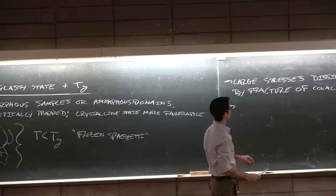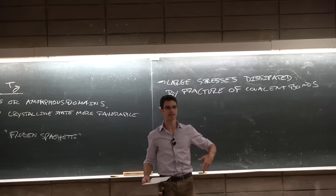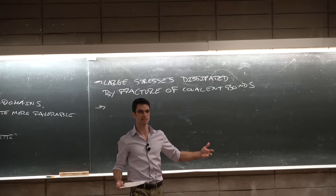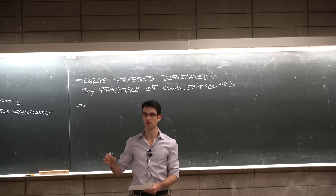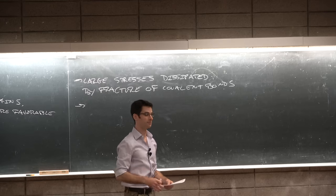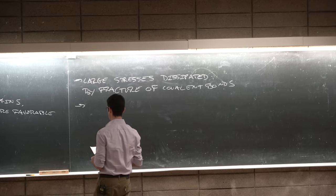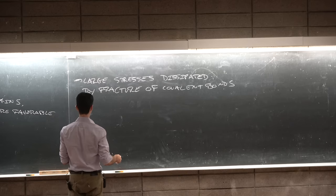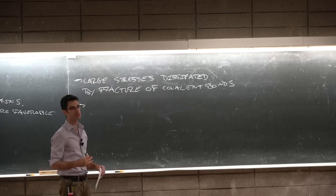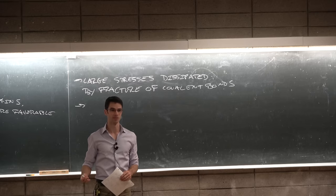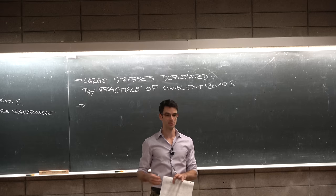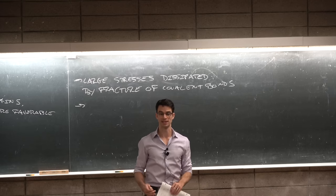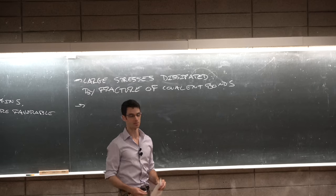But stresses that are smaller than the stress that it takes to fracture the sample can be dissipated to some extent by local rotations of bonds. And these are called sub-TG relaxation mechanisms. And this contributes to the toughness of a polymer sample.